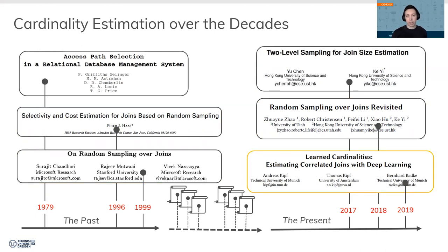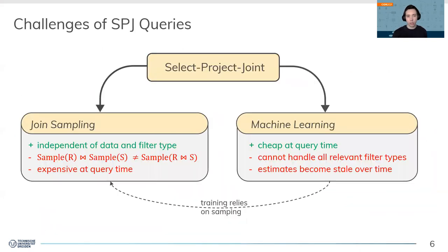On the other hand, recent research applies machine learning to the problem of cardinality estimation. However, these methods do not support all relevant predicate types yet, and their training depends on executing a plethora of joins or using join sampling itself. We can conclude the challenges of arbitrary complex select-project-join queries: we have to support arbitrary complex filter expressions and scale within the number of joins.